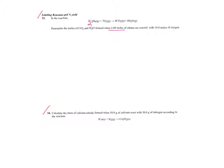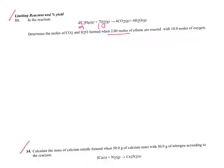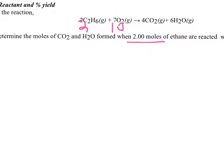For number 33, determine the moles of CO₂ and H₂O formed when two moles of ethane are reacted with 10 moles of oxygen. What I always like to do is figure out what I've got and label it. So I have two moles of ethane and I have 10 moles of O₂.